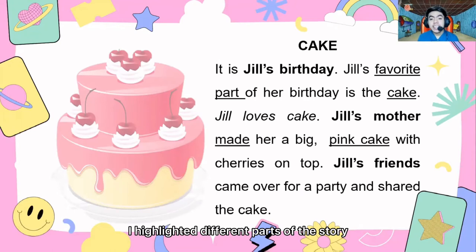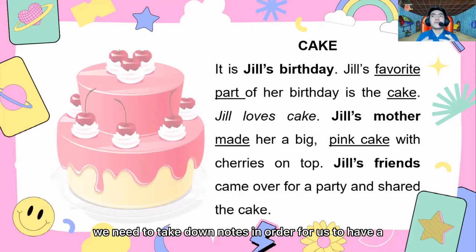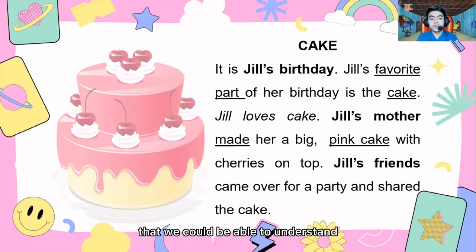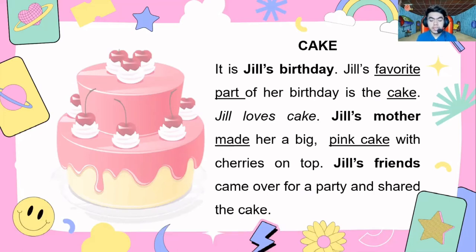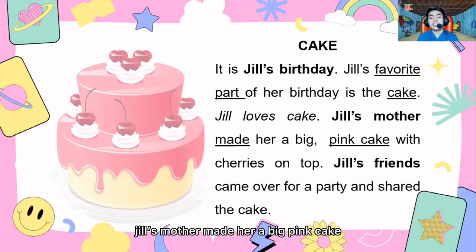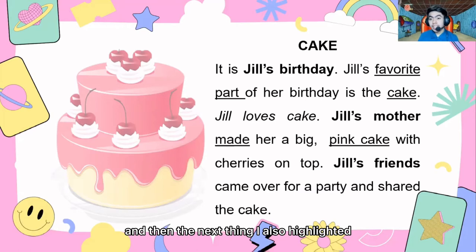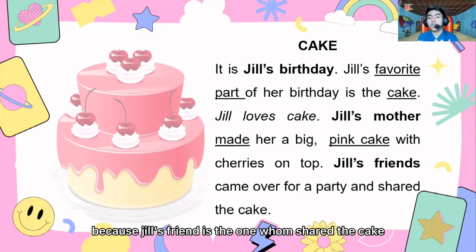As you can see, I highlighted different parts of the story because, as I said, we need to take down notes in order to have a deeper understanding of the context. I highlighted 'Jill's birthday' so we understand it is Jill's birthday. I also highlighted that her favorite part is the cake. The next highlight is that Jill's mother made her a big pink cake — so we understand who made the cake and what color it is. I also highlighted Jill's friends because they are the ones who shared the cake.